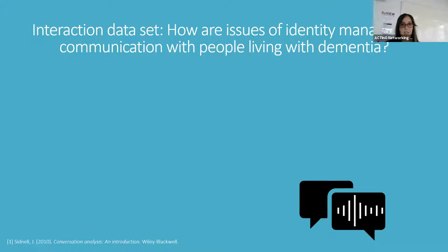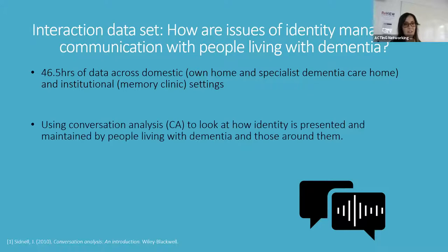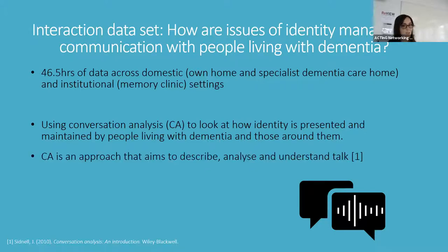As part of this project, I'm aiming to answer this question: how are issues of identity managed in communication with people living with dementia? This data set features 46 and a half hours of video data across domestic and institutional settings, and I will use conversation analysis, or CA, to look at how identity is presented and maintained by people living with dementia and those around them.